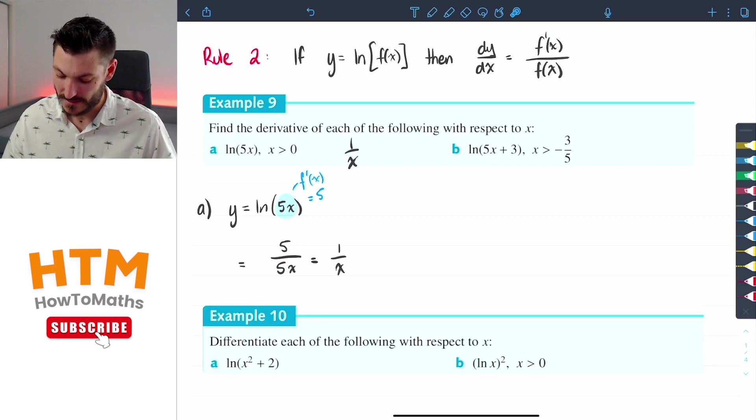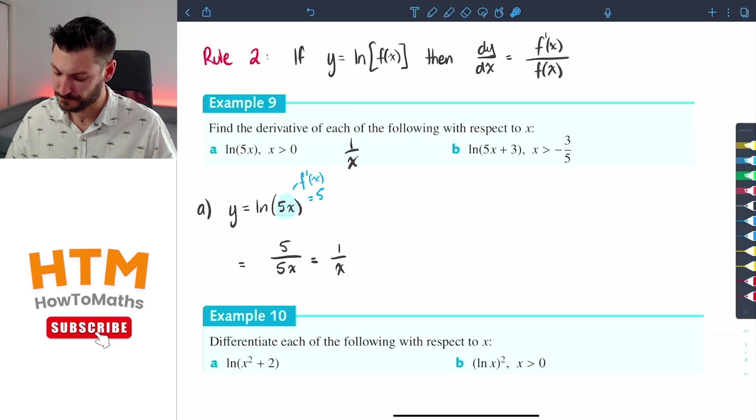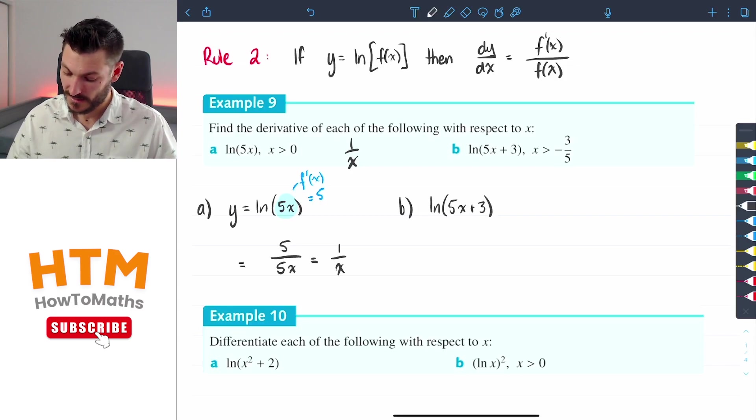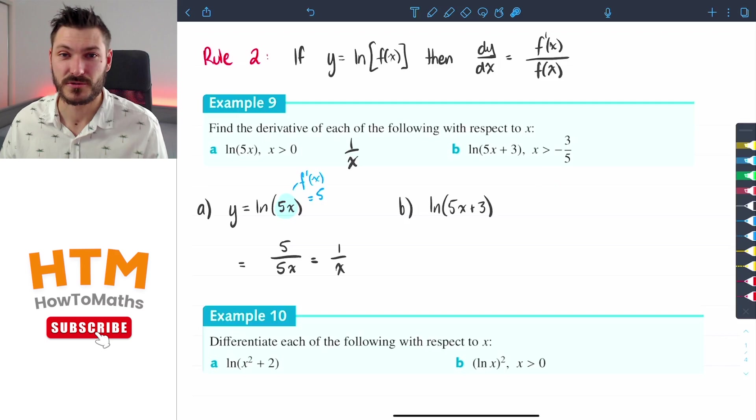Okay let's have a look at b which is slightly different. Looks similar but slightly different. So b we have ln of 5x plus 3 this time, so the plus 3 on the end. Now don't worry too much about this x is greater than negative 3 over 5.